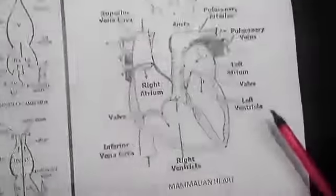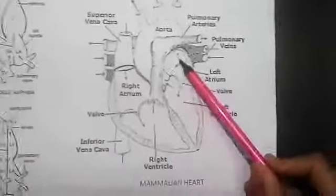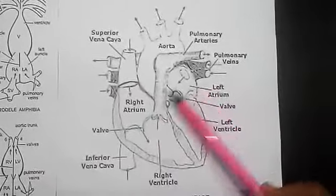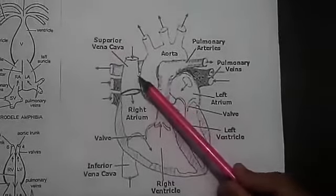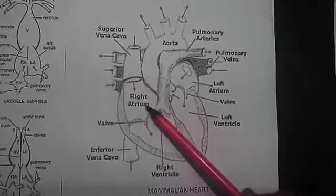This is the structure of mammalian heart, completely divided ventricle. The septum is complete, completely divided auricle and the openings in the auricle. This is right atrium, this superior vena cava is draining blood into right atrium.